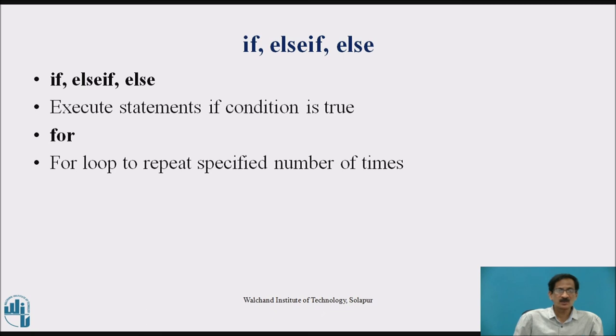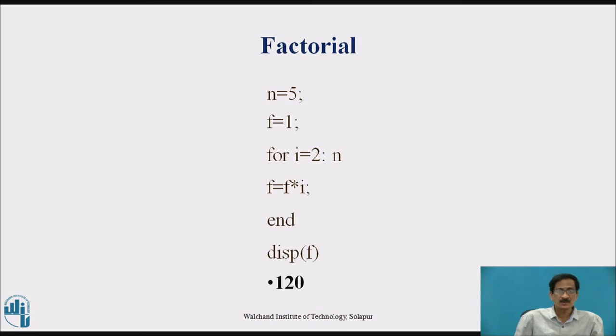For loop to repeat specified number of times. Factorial: n equals 5, f equals 1. For i, it takes value from 2 to n. Expression f equals f times i and display f. It will take value of i as 2, 3, 4, 5. After execution, it will give the result 120.